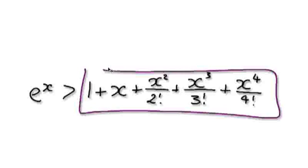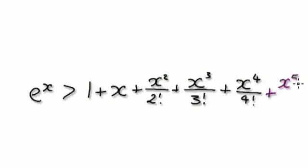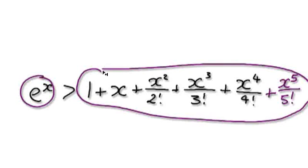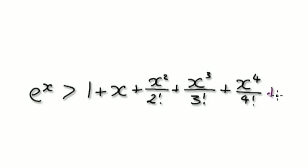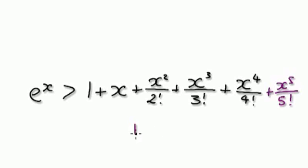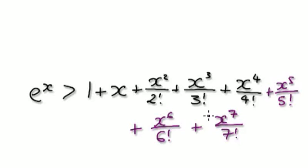You can keep on adding another term here — let's say x to the power of 5 over 5 factorial — and then this is always greater than this. It's kind of strange that you can keep on adding things, but yet it will always be lower than this thing here. So you can keep on adding x to the power of 5 over 5 factorial, then x to the power of 6 over 6 factorial, and so on. It's quite strange that you keep on adding things, but yet it's always lower than this.